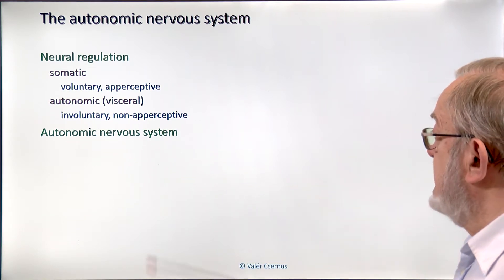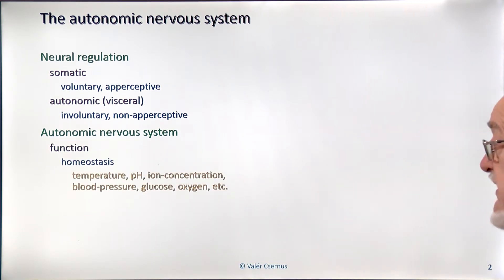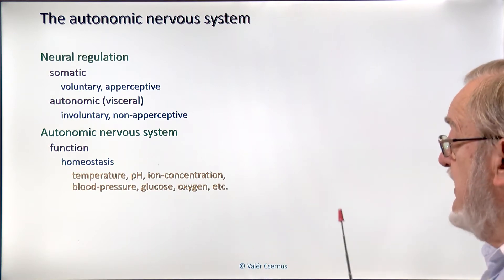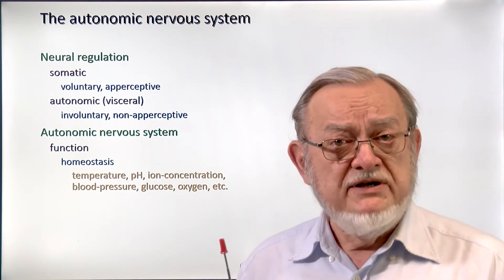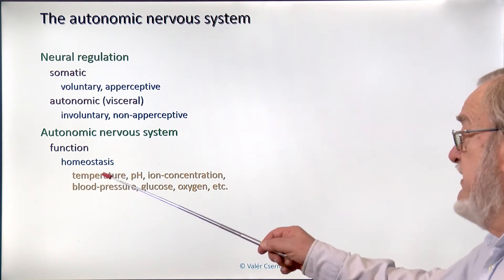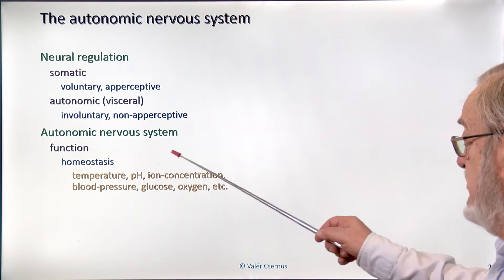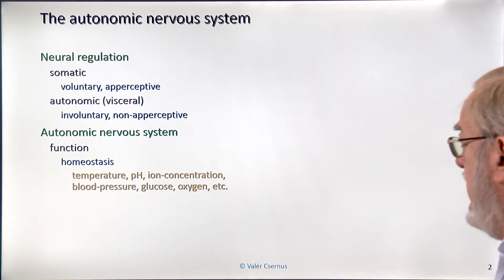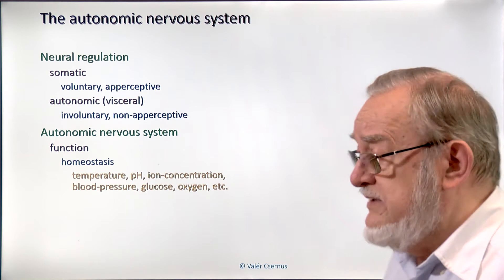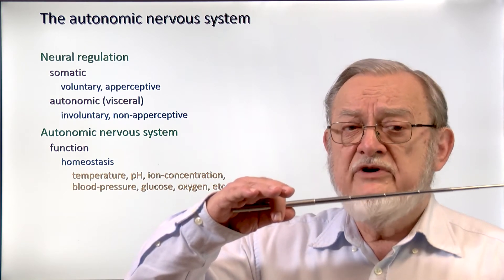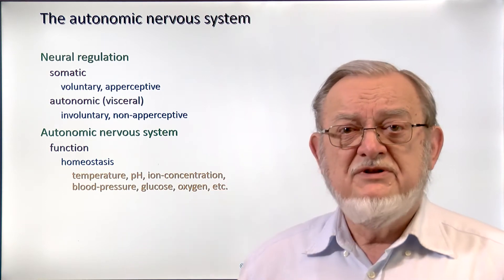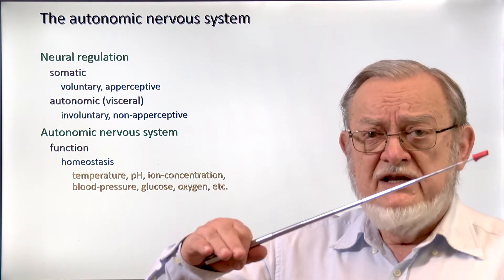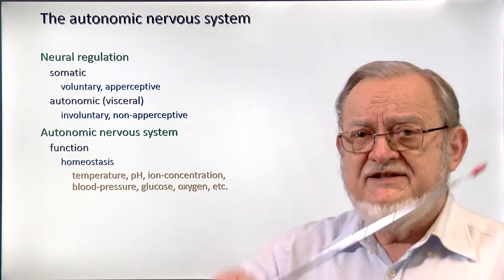The function of the autonomic nervous system is homeostasis. We need to keep a couple of physical and chemical parameters stable for the body to work appropriately: standard body temperature, pH, ion concentration, concentration of many other chemicals, blood pressure, and so on. The function of the autonomic nervous system is to keep these parameters stable. They work on a simple principle — you don't have to think about body temperature or optimal pH, it's set — they just have to ensure it stays stable.